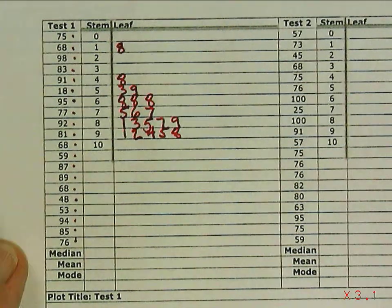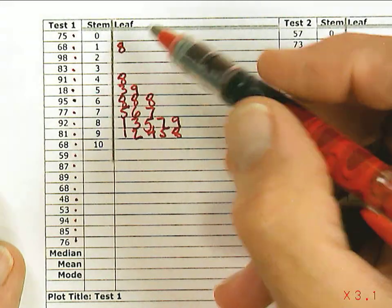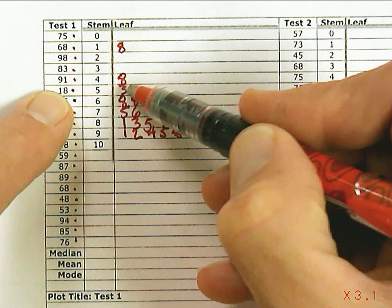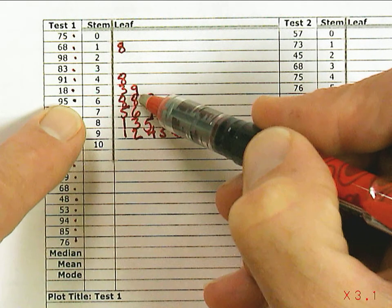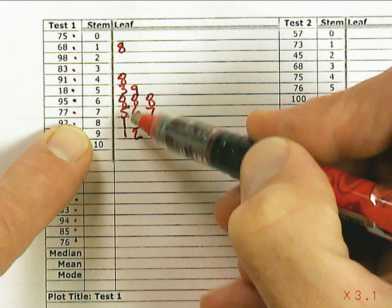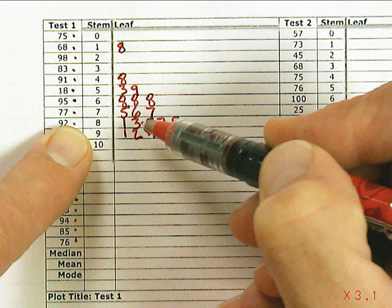So now what I actually have is the numbers in order: 18, 48, 53, 59, 68, 68, 68, 75, 76. You can see I can use a stem and leaf plot as a way of ordering them.